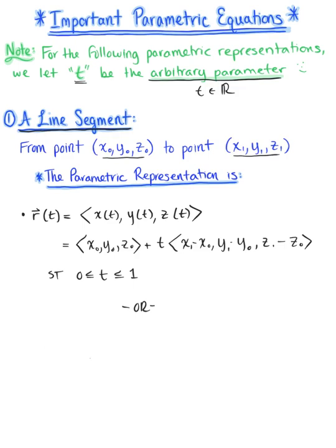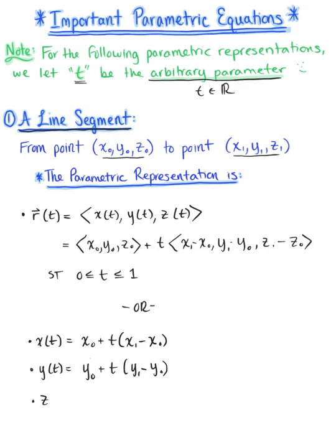In addition to the vector-valued function, we also have the individual parametric equations for this line segment. The parametric equation representation gives us three equations: x(t) = x₀ + t(x₁−x₀), y(t) = y₀ + t(y₁−y₀), and z(t) = z₀ + t(z₁−z₀). Again, this is such that t is greater than or equal to 0 and less than or equal to 1.